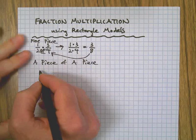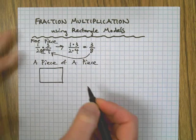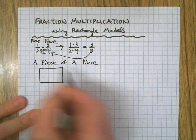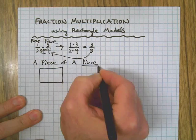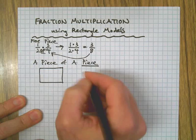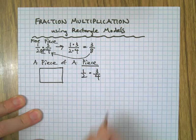Well, let's use a model to figure it out. First of all, just draw a rectangle, and to know what the piece of a piece is, first we have to have the first piece, which is the second number in the problem, right?